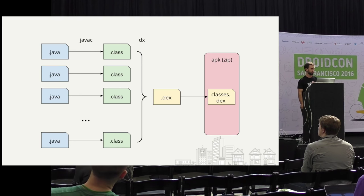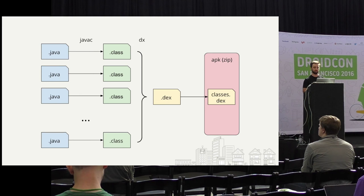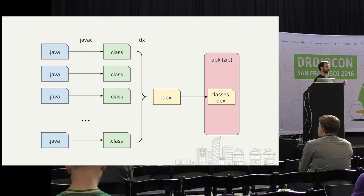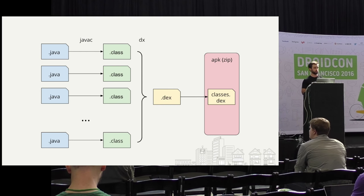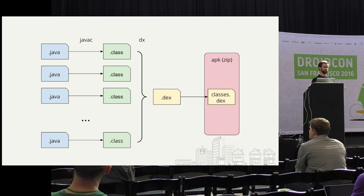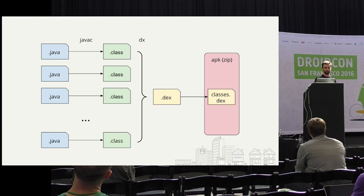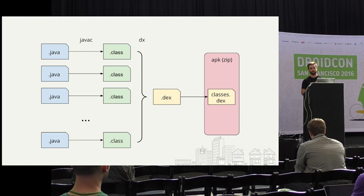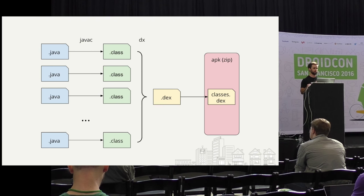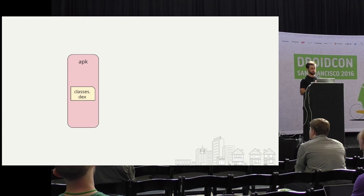Let's do a quick overview of the build process. If you come from Java development, you're familiar with Java to class to jar. In Android, you go from Java to class files, and that's where the similarities end — we go to a dex file. The reason is largely performance-motivated. When you combine all the class files together, you can remove redundancies between them. Next, we put the dex file into a classes.dex, into an APK container, which is really just a zip file.